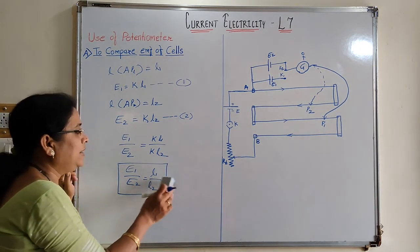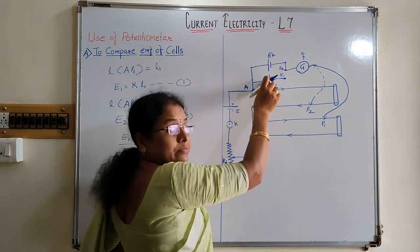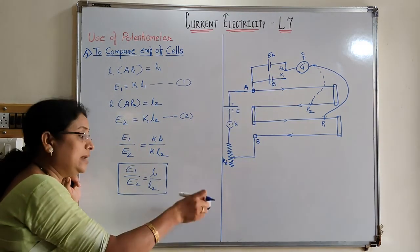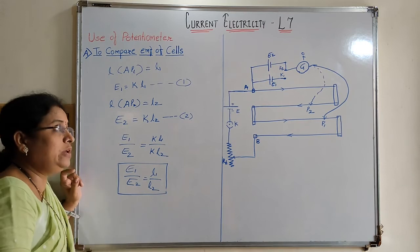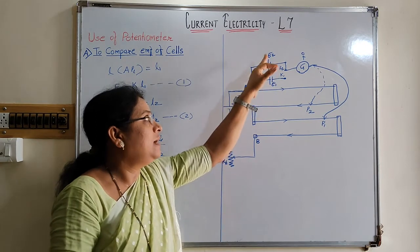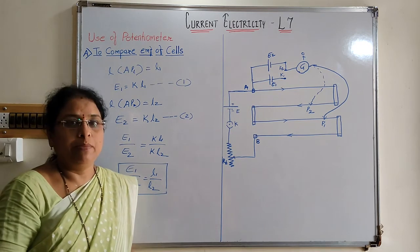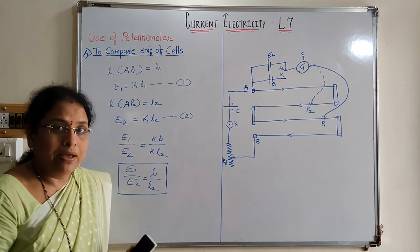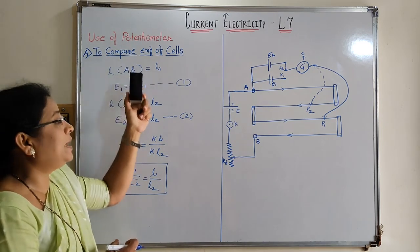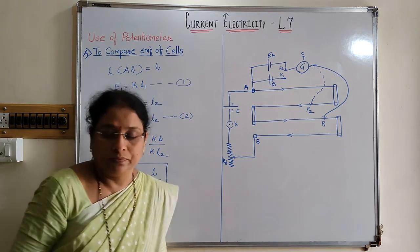As L1 is more than L2, we get the ratio greater than 1, confirming E1 > E2. As a precaution in this experiment, choose the cell having greater EMF as E1 and the cell having less EMF as E2, then we can compare the EMF of two cells. In the next video, we will see the use of the potentiometer to compare the EMF of two cells by the sum and difference method. Thank you.